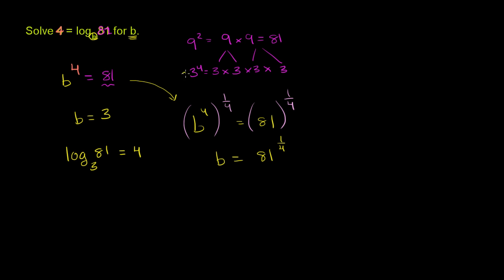But figuring out what 81 to the 1 fourth power is, you really have to go through this exercise anyway. Because when you raise something to the 1 fourth power, you're really saying, what do I have to raise to the fourth power to get to 81? And then you get what 81 is to the 1 fourth power. So actually, this is another way of realizing that 81 to the 1 fourth power is equal to 3. 3 to the fourth power is equal to 81. 81 to the 1 fourth power is equal to 3.